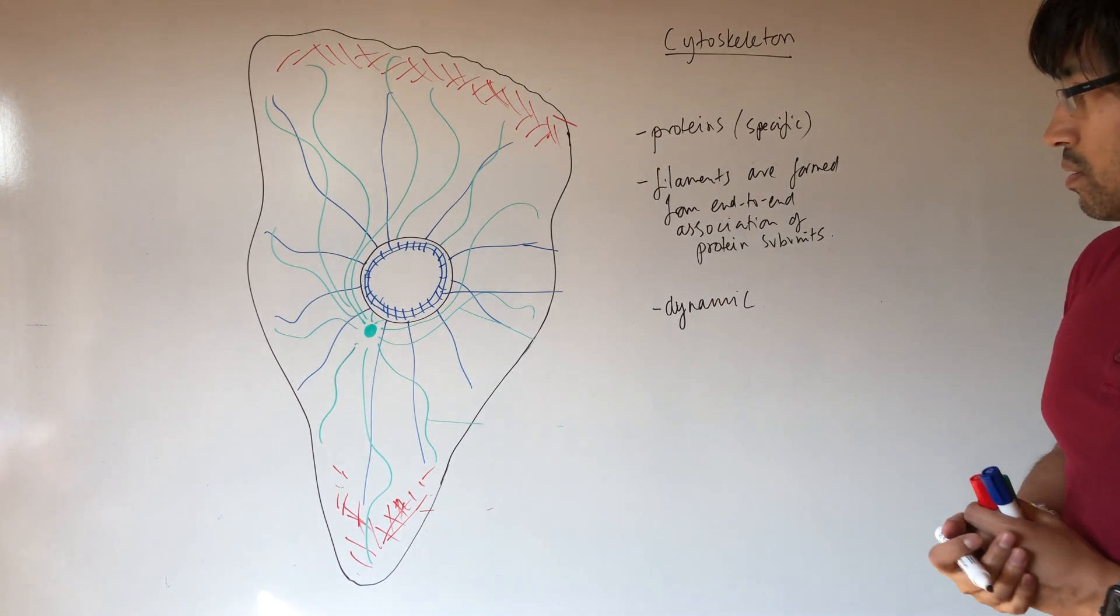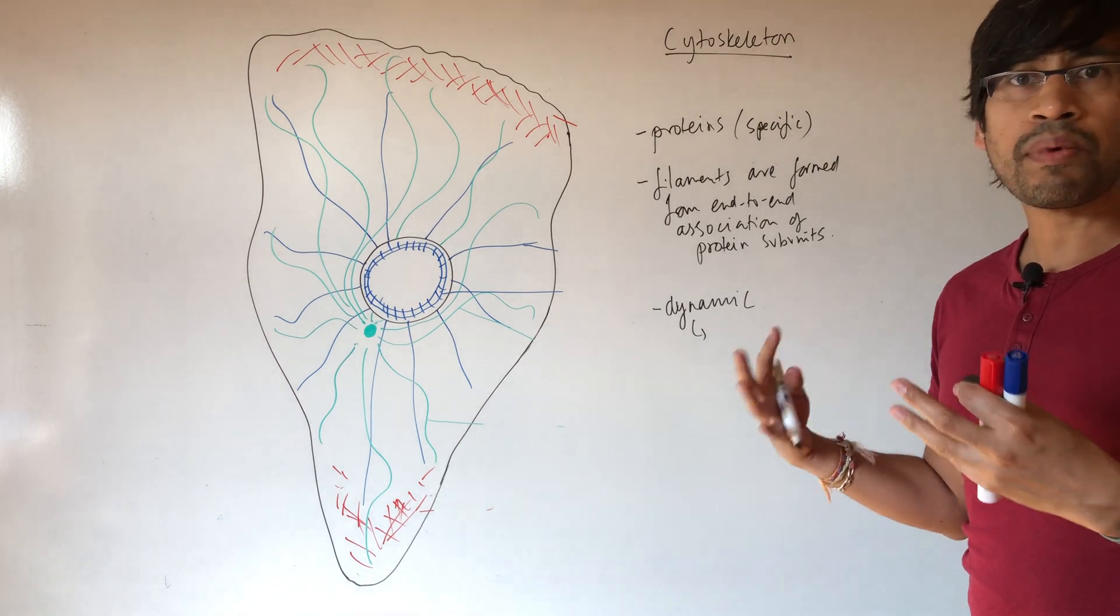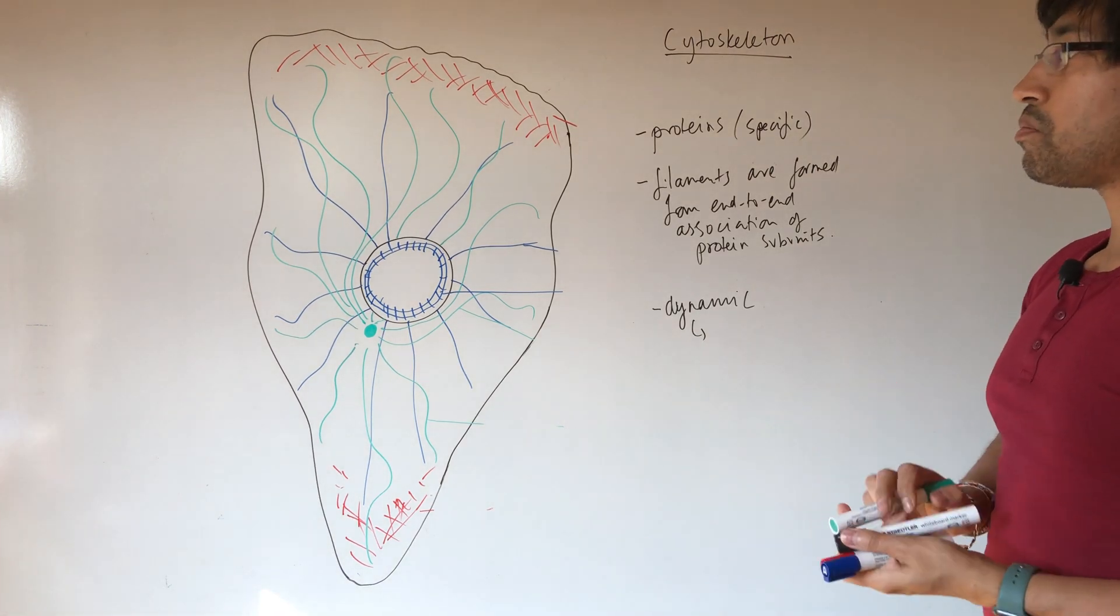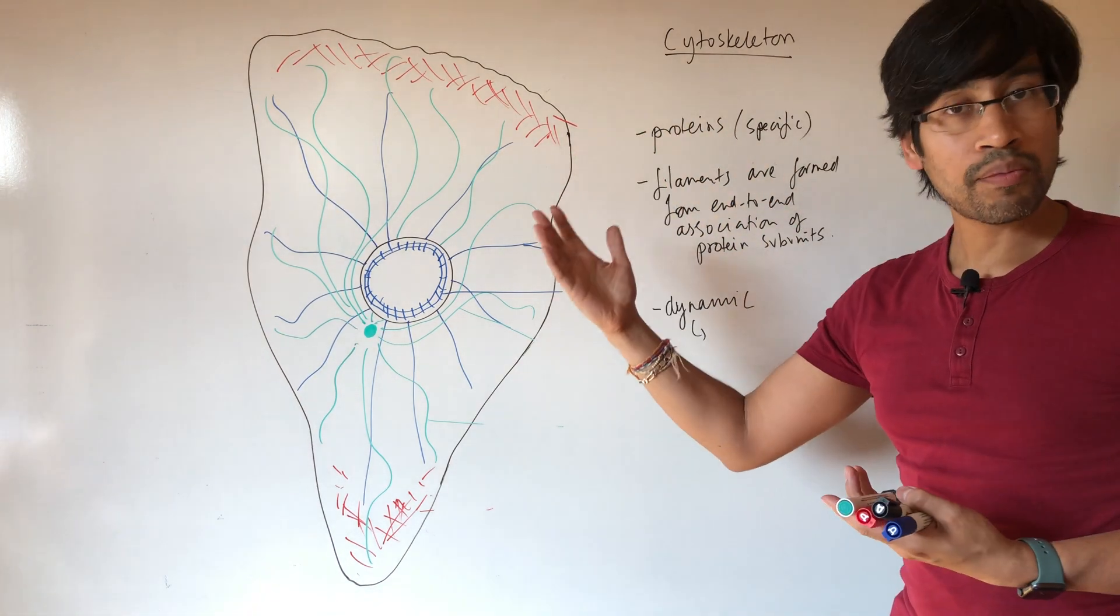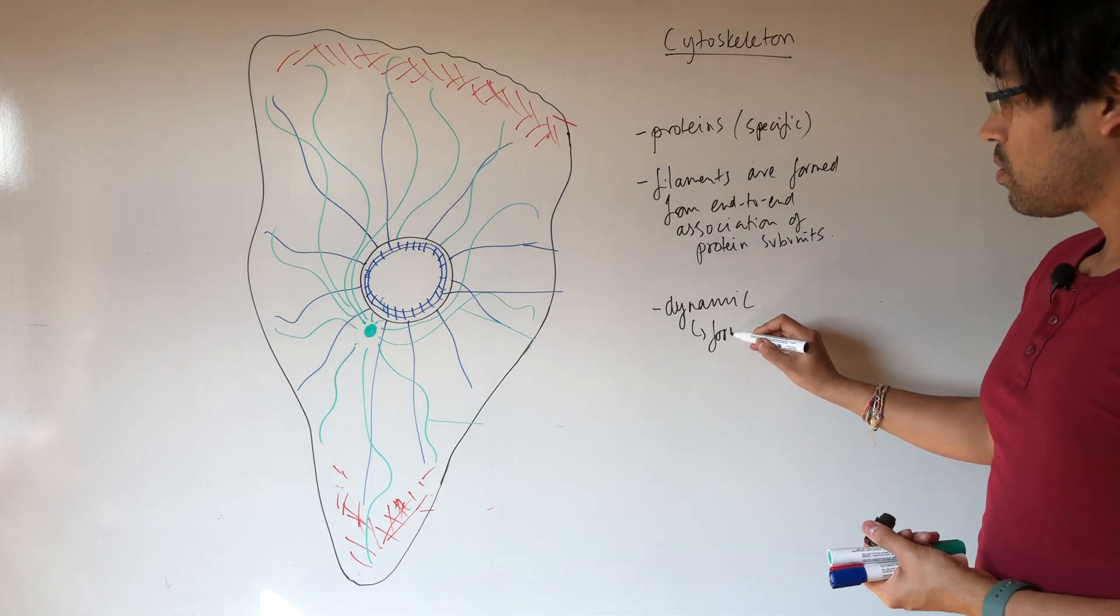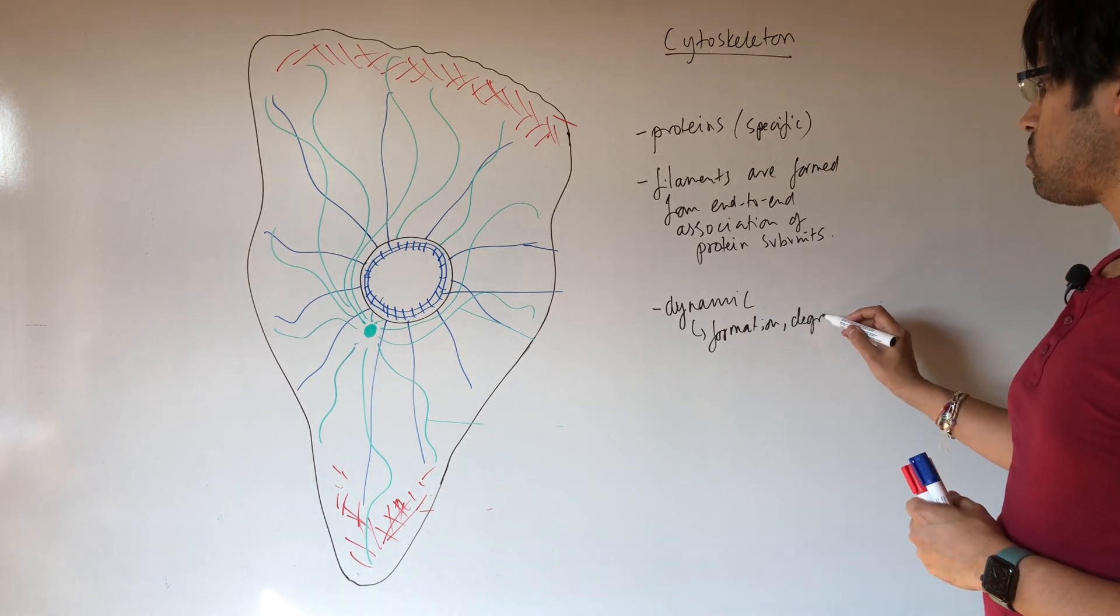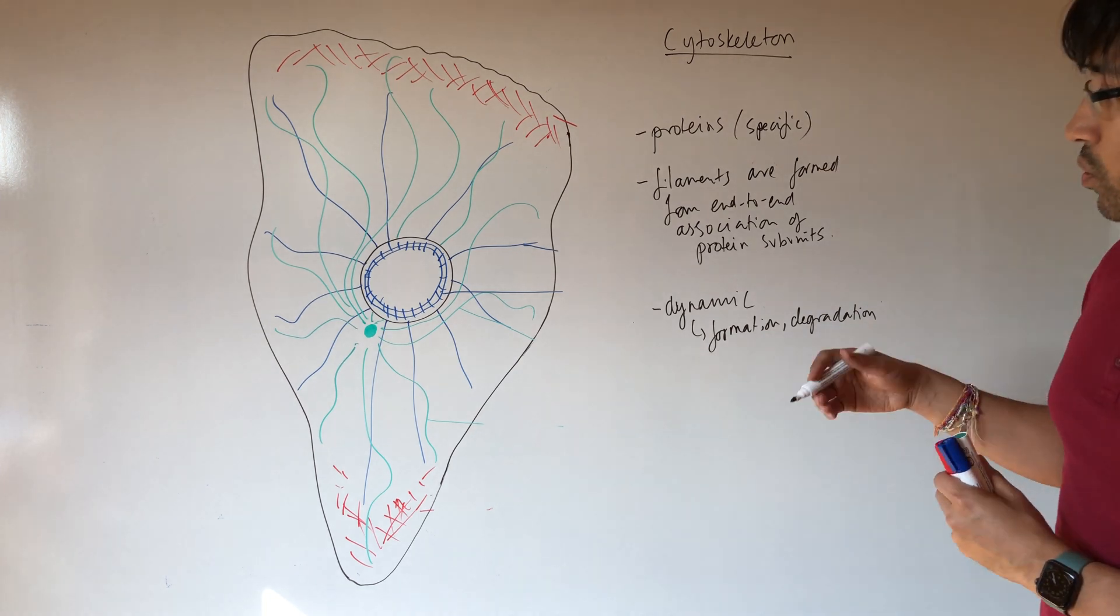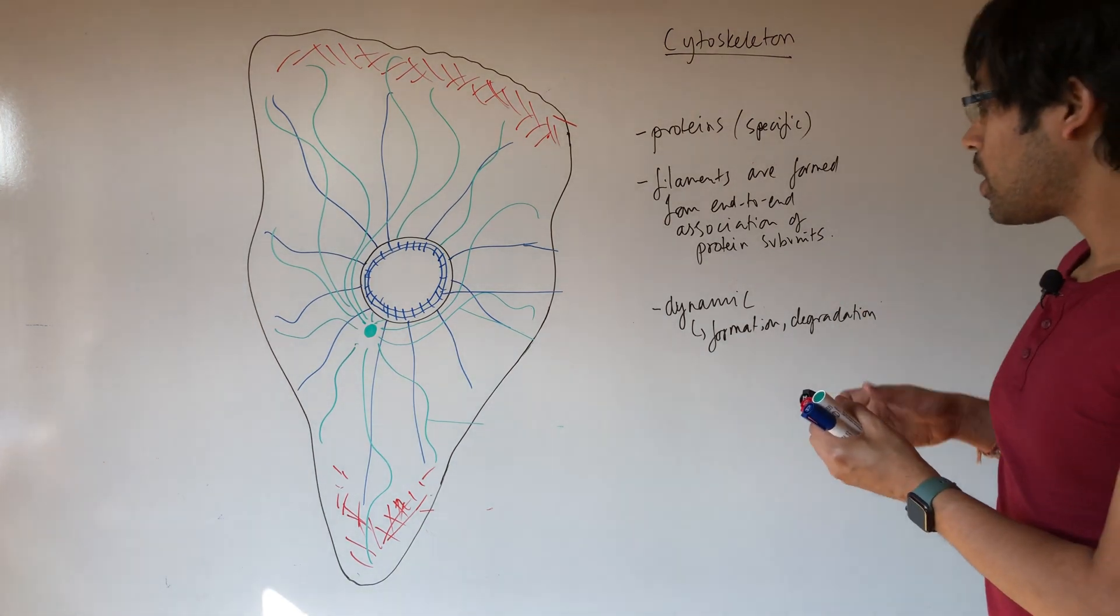That means that they are not static in time and space. They are constantly being made, they are being broken down. They are possibly made in one part of the cell as the requirements of the cell are, and they are being repositioned in other places. So their dynamic nature is very important in terms of formation and degradation. So both of these are important in their function. So not like static structures, not literally like a skeleton.